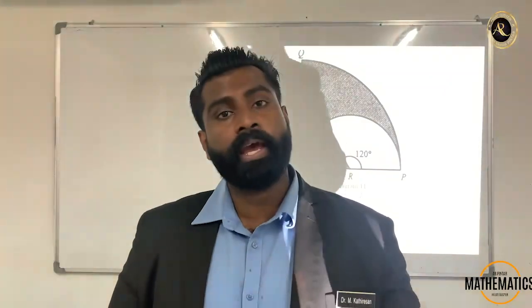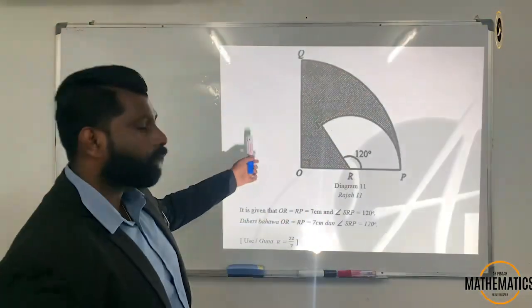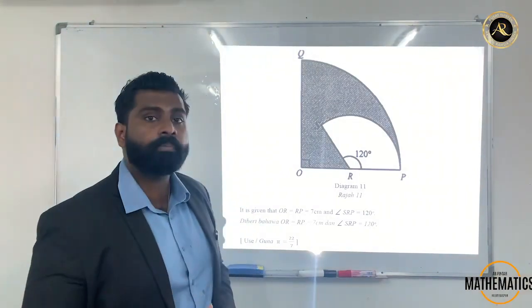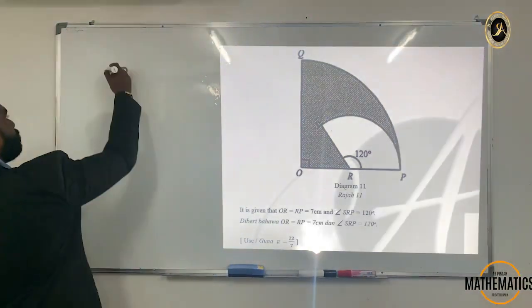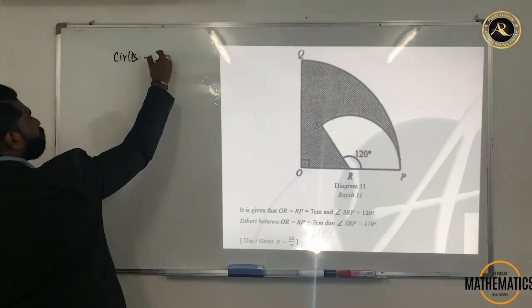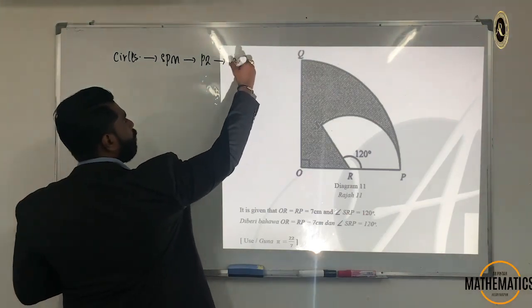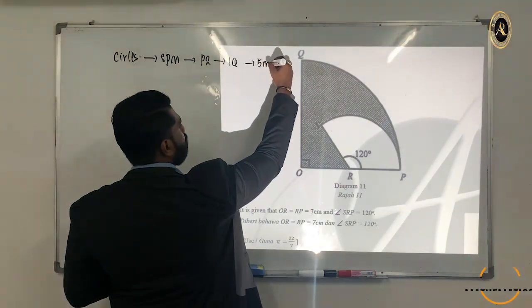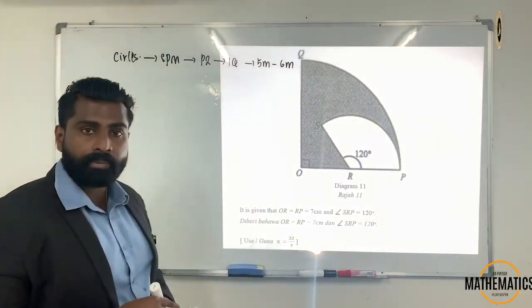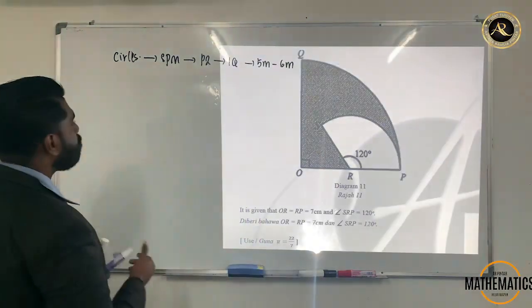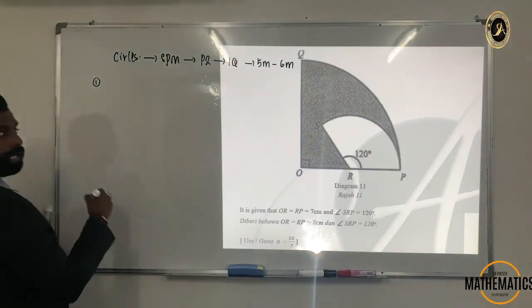Hi guys, how are y'all? Hope all of you are doing good. Today we're going to enter a new chapter which will come out in your Paper 2. For those sitting for SPM 2020, the exam will be in 2021. You will see this question in Paper 2. The topic name will be Circles. This chapter will come out in Paper 2 — one question, and the marks can go up to 5 or 6 marks.